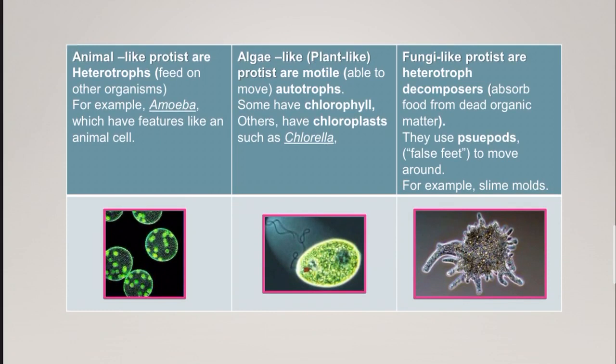Animal-like protists are heterotrophs that feed on other organisms. For example, the amoeba, which has features like an animal cell.